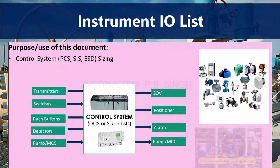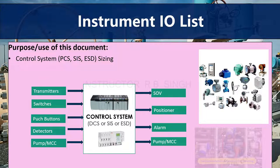With the help of the IO List, we can calculate the number of marshalling panels and system cabinet panels. In short, the IO List is required for system sizing. This IO List is also shared with the system vendor, as they will require this document.